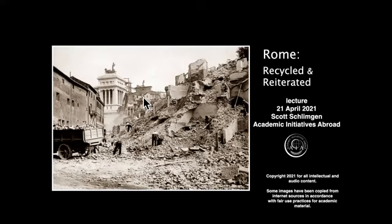I want to speak to you today about how Rome has recycled itself over its many centuries of existence. This recycling can be in a material form, reusing the material of the past city in new buildings, but also the idea of reiterating old ideas — simple ideas — into something ever more complex as you layer these ideas upon themselves and reinterpret them again and again through the centuries. We can see in the photo on the left that part of Rome's existence has been in its continual destruction and reconstruction, often out of the same material and often out of the same ideas.